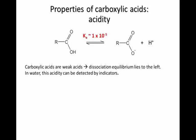Carboxylic acids are not called acids for nothing. When dissolved in water, they dissociate to give hydrogen ions. They are weak acids, and this means that only a small proportion of the acid molecules dissociate into ions, so most acid molecules remain undissociated. Another way of saying this is that the dissociation equilibrium lies far to the left, and this is indicated by the fact that the value of Ka is much less than one.